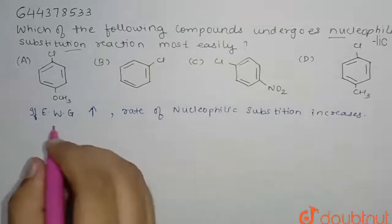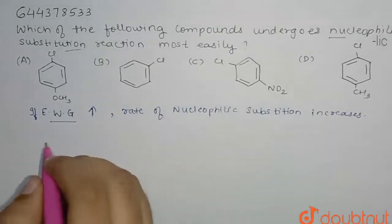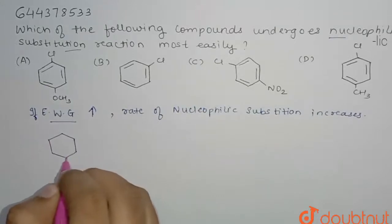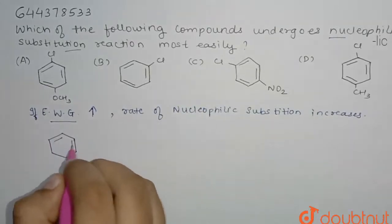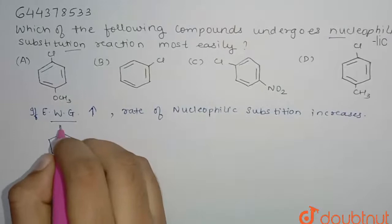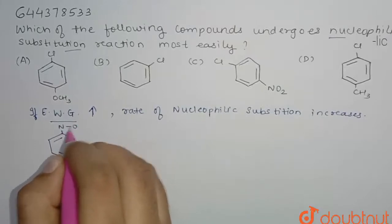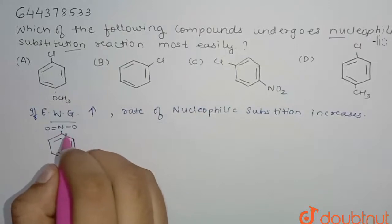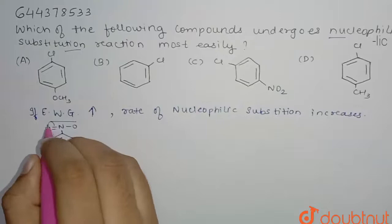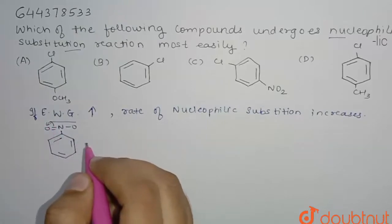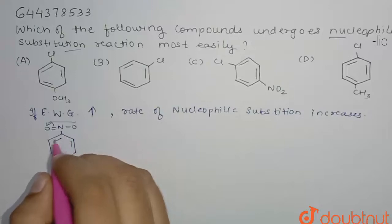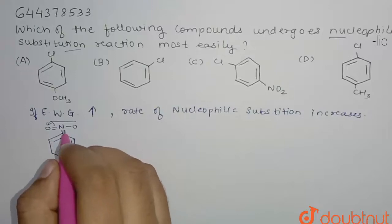We can take the example of NO2. When NO2 is present in a benzene ring, we have a single bond O and double bond O. When this bond moves here and this bond from here breaks and joins from here, we are basically seeing resonance — the minus-R effect.